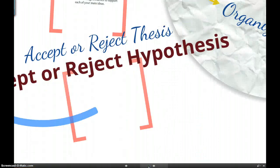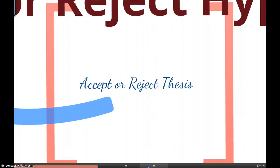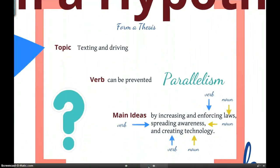The next step, accepting or rejecting your thesis. So, because one of our points in our thesis did not have support, we have to reject it. Even though preventing texting while driving with technology is a good idea, it does not have support. So, we really can't talk about it in our text. So, we reject our thesis and have to go back to form a new thesis.